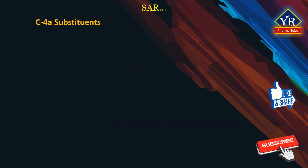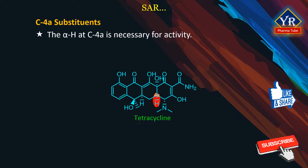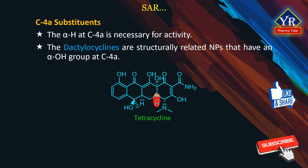C4A substituents. The alpha hydrogen at the C4A position of the tetracyclines is necessary for useful antibacterial activity. The dactylocyclines are structurally related natural products that have an alpha hydroxyl group at the C4A position. These compounds are newer tetracyclines and are yet to be developed.